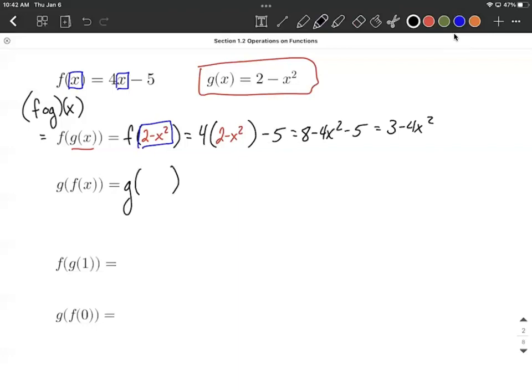But this time we need to replace the f of x, the inner function, and f of x is defined to be 4x minus 5. So 4x minus 5 is going to go in the place of f of x.